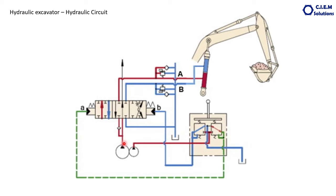The hydraulic circuit in the excavator is mainly divided into two parts. Part one is the main pressure circuit. Part two is the pilot circuit. The main pressure circuit carries the high pressure hydraulic oil from the pump to the implement actuating devices. The pilot circuit carries oil from the pilot pump to actuate the control valve.